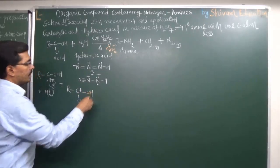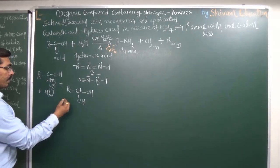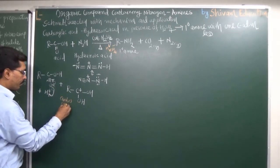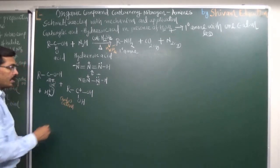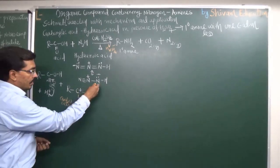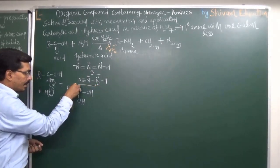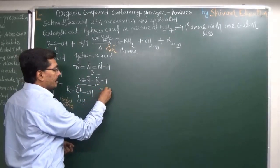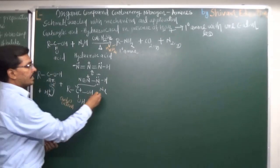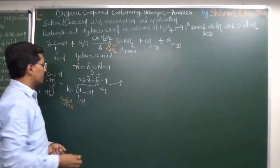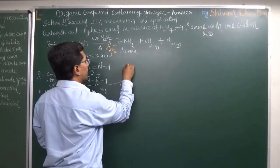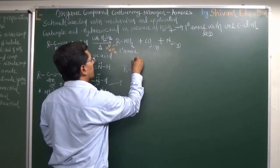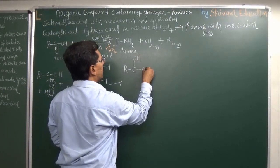As a result, we get a carbocation — a carbon with a positive charge, with one hydroxyl group and another hydroxyl group. Now in this carbocation, hydrazoic acid acts as a nucleophile and attacks the carbon. When this attack occurs, we get a new intermediate structure.